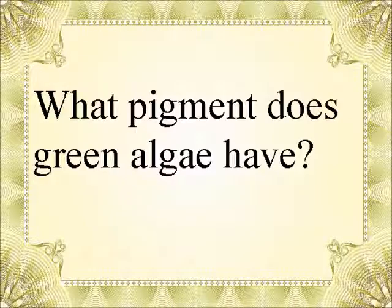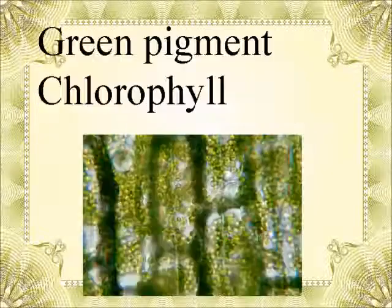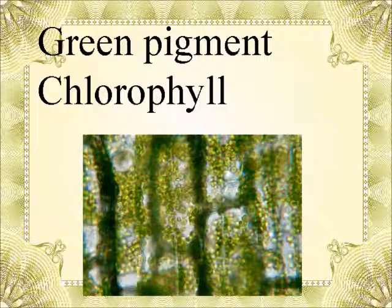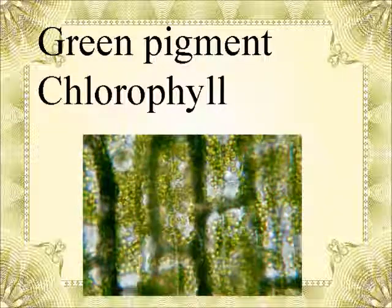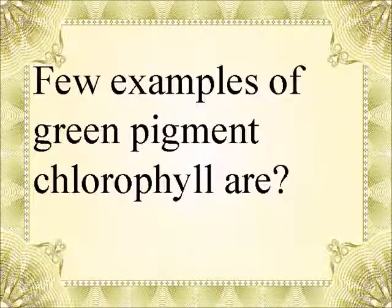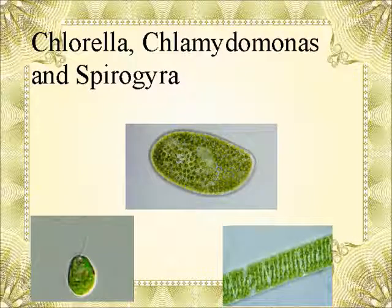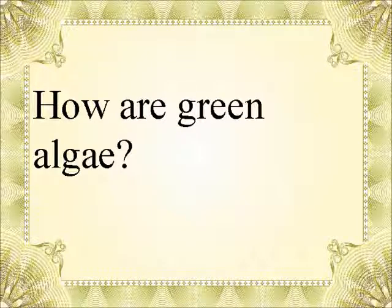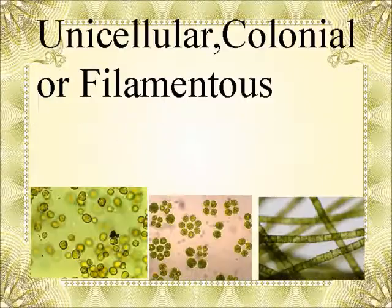What pigment does green algae have? Green pigment chlorophyll. A few examples of green algae are Chlorella, Chlamydomonas, and Spirogyra. Green algae can be unicellular, colonial, or filamentous.